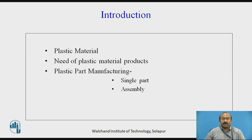Plastic part manufacturing is done by two means. One is that a product or part can be manufactured as a singular element to fulfill the requirement. In the second case, there are limitations for manufacturing a singular product due to geometry, size, and other specifications. With those limitations, we discretize a product into a number of small elements, which are manufactured separately and then assembled together for the expected working of the product.